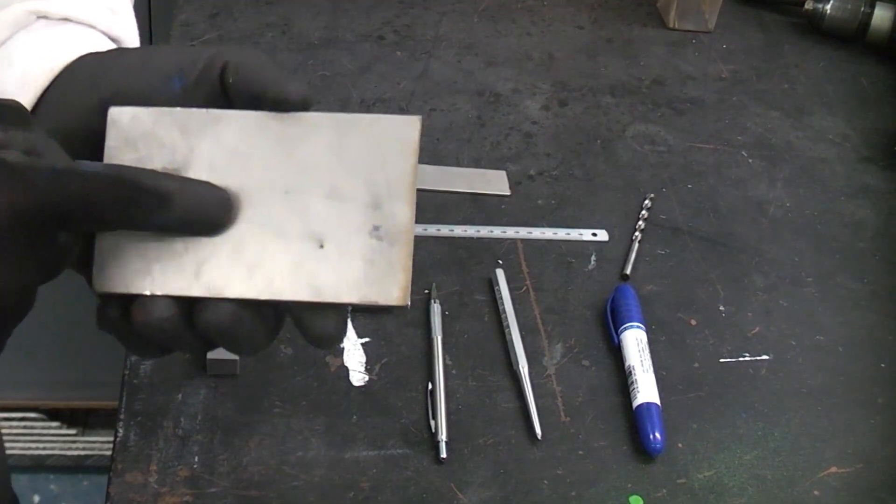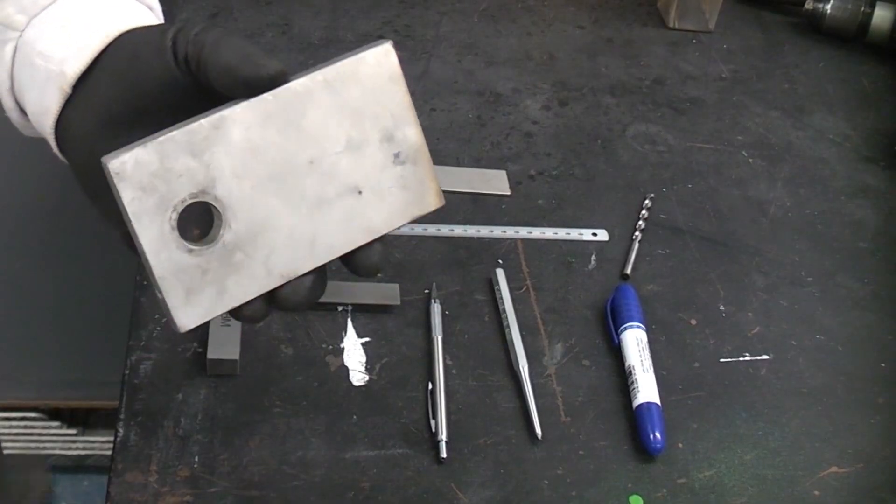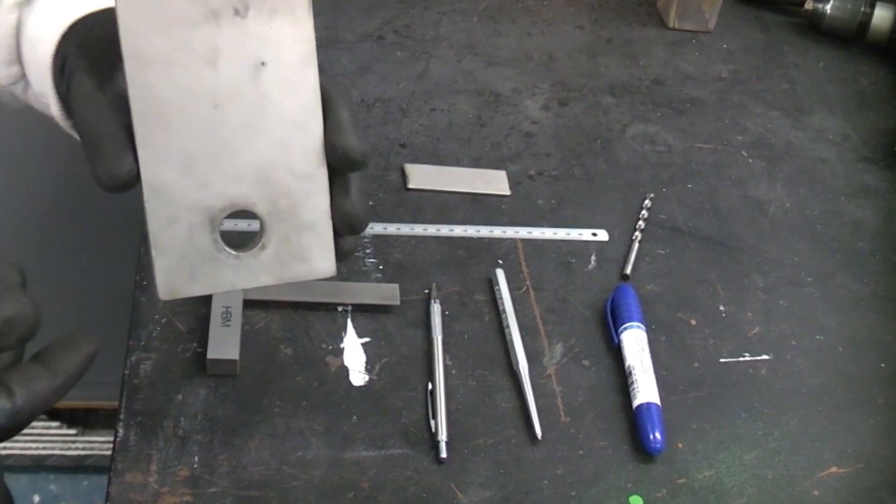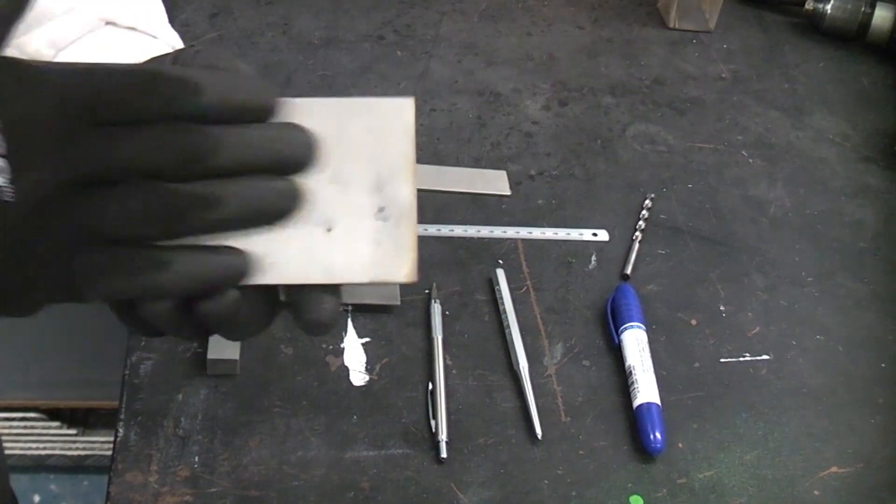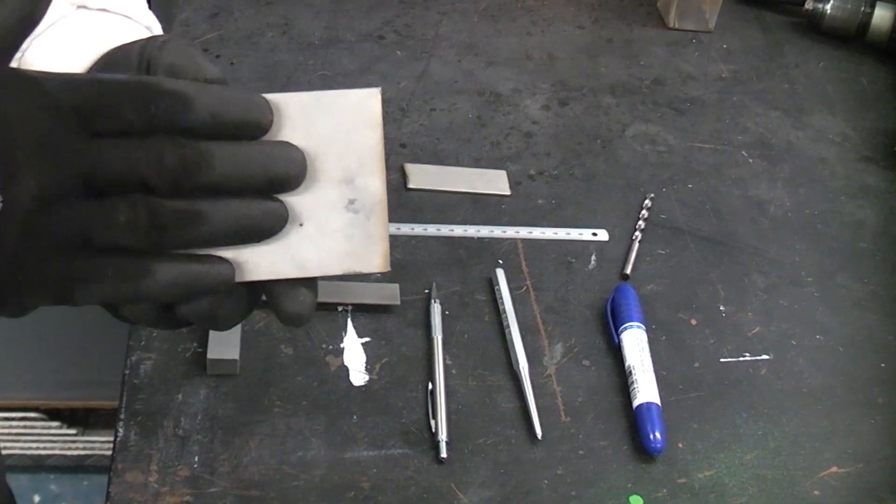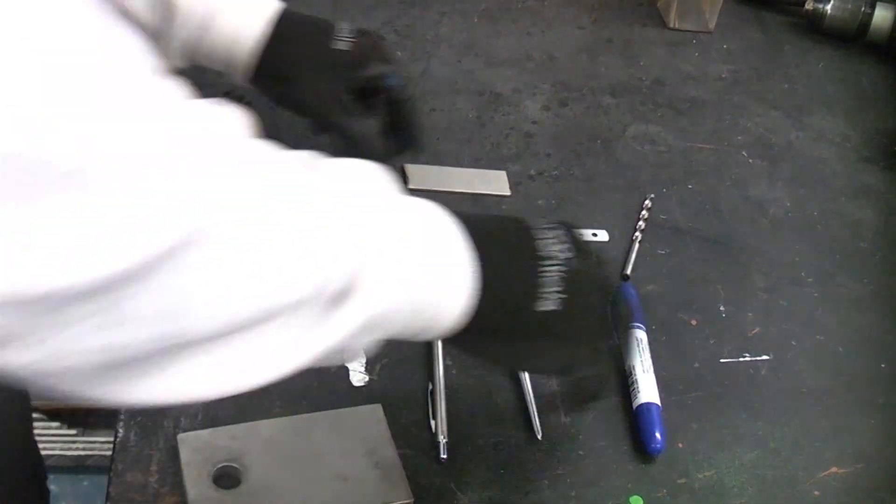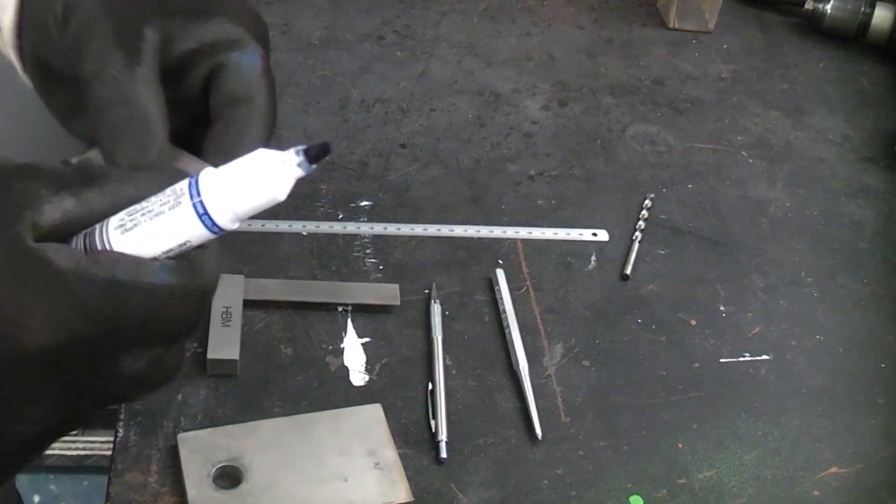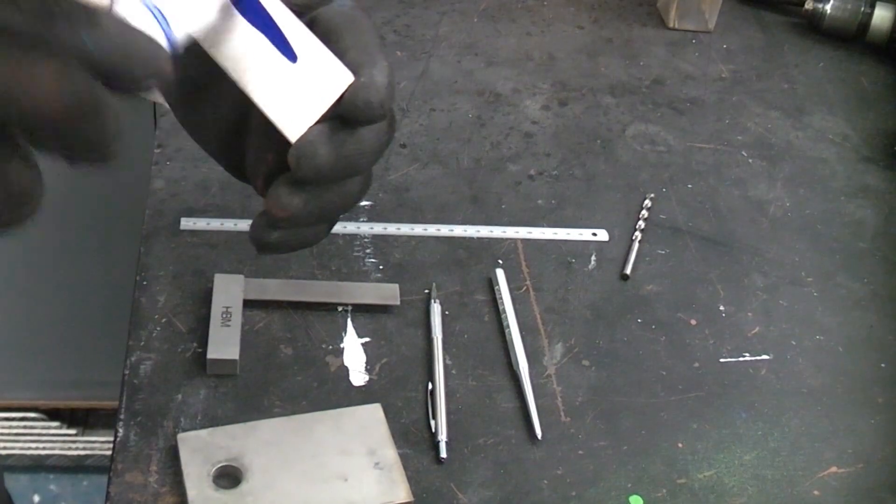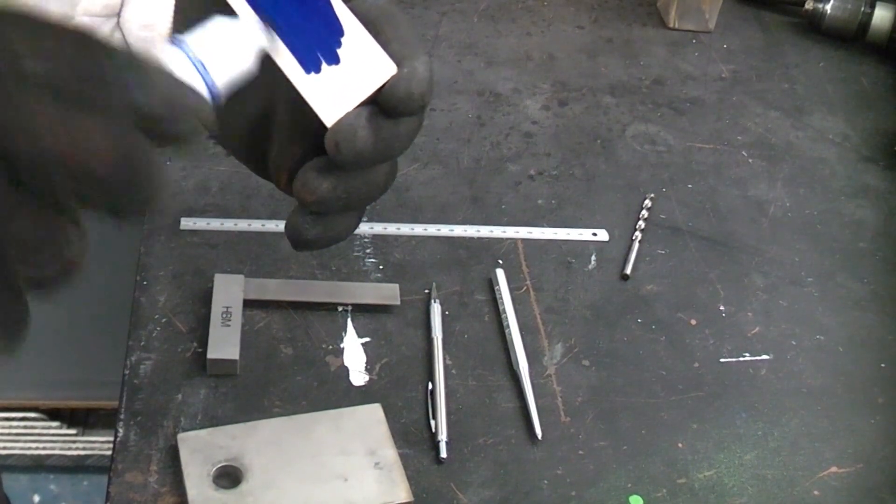We're also going to color the surface of the metal to make it easier to see the scribe lines. To do that you would use something called engineer's blue which is an ink designed to color the metal. If you don't have any engineer's blue you can use a permanent marker like this one and simply color in the metal.